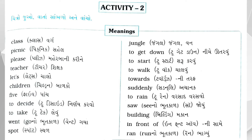Children — C-H-I-L-D-R-E-N — Children, એટલે બાળકો. Five — F-I-V-E — Five, એટલે 5. To decide — T-O-D-E-C-I-D-E — To decide, એટલે નિર્ણય કરો. To take — T-O-T-A-K-E — To take, એટલે લેવું. Went — W-E-N-T — Went, એટલે ગયા.